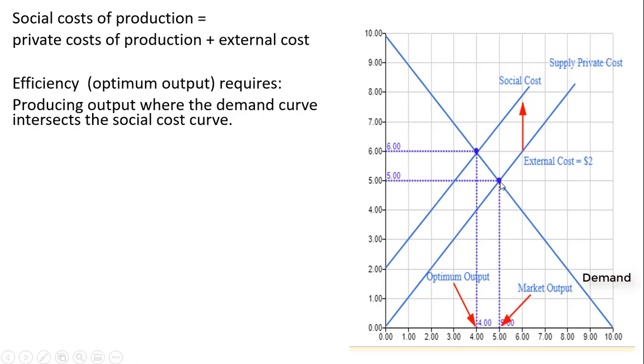The market outcome occurs where the supply curve intersects the demand curve, at a price of $5 and a quantity of 5 units. That would be the market outcome.